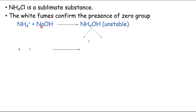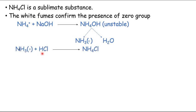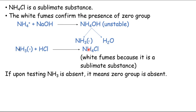Why does this happen? The ammonium ion combines with sodium hydroxide to give rise to ammonium hydroxide. This ammonium hydroxide is unstable and dissociates into ammonia and water. This ammonia, when it comes in contact with HCl, gives rise to ammonium chloride. Ammonium chloride is a sublimated substance, that is why we observe dense white fumes. If upon testing ammonia is absent, it means group zero is absent — no smell of ammonia, no group zero.